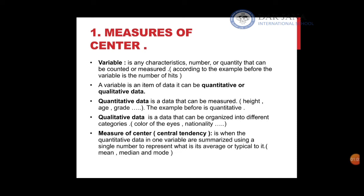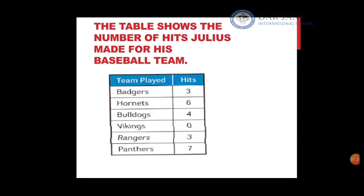The lesson revolves around measures of center, or central tendency, which are three basic measures: mean, median, and mode. In general, these measures try to find the center of a data set. The general definition is: when quantitative data in one variable are summarized using a single number to represent what is average, typical, or the middle of that data.